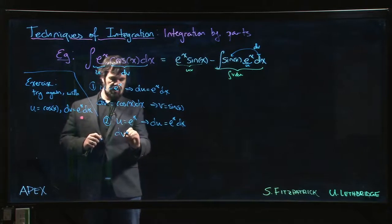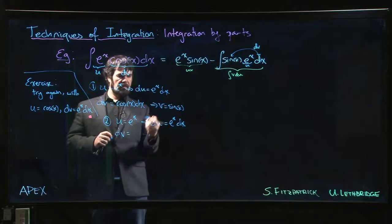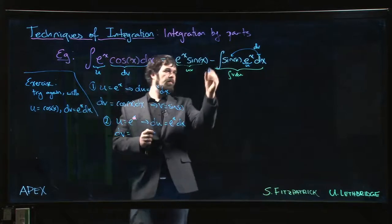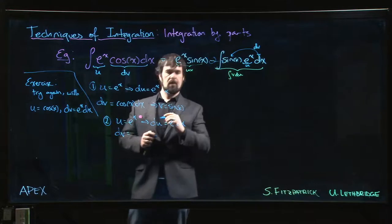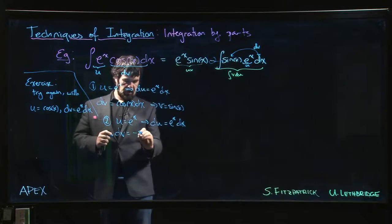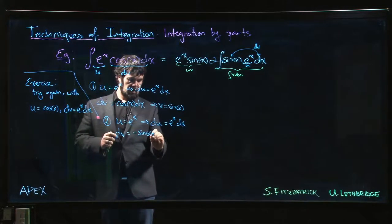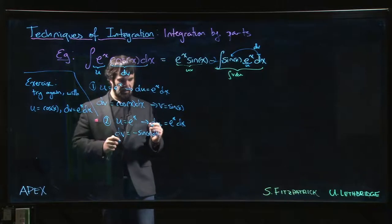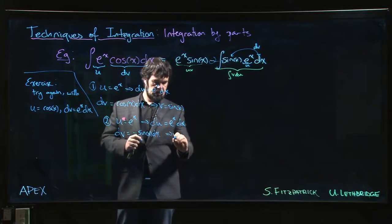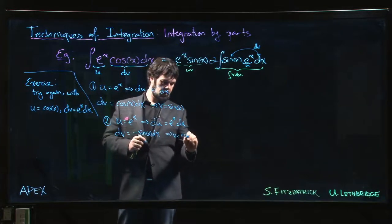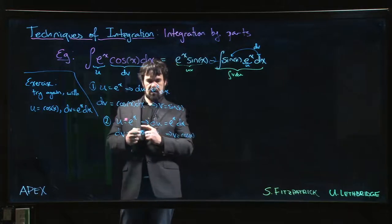This time dv is, well, if we bring that minus sign in, we can take dv to be minus sine x dx, in which case v would be cos, okay?